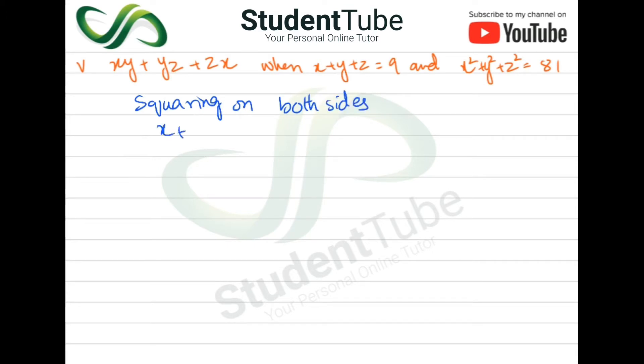So this will be (x + y + z)² = 9². Sorry, here is equal to 9, 9 squared.